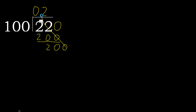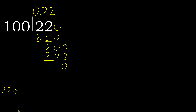0 point. Point is here. 200. 100 multiplied by 2 is 200 — not greater. Subtract: 0. 0, therefore finish it. 22 divided by 100 is 0.22.